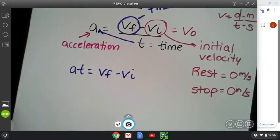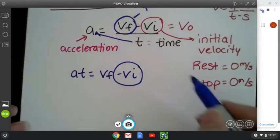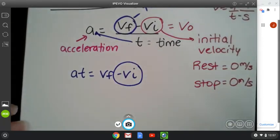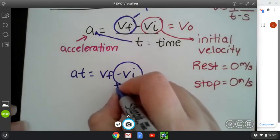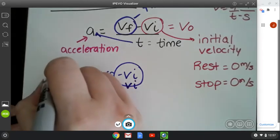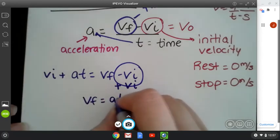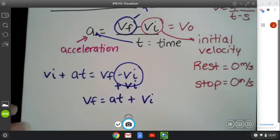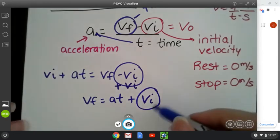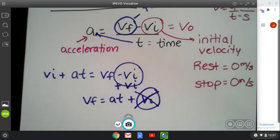Now I need to move my vi so it's over with my at. How do I do that? I'm going to add vi plus vi plus vi. So my final equation vf equals at plus vi. If this is zero, then this is adding zero. So we actually wouldn't need that. So a lot of the times, if you're going to find your final velocity when you're dealing with acceleration, it's vf equals a times t.